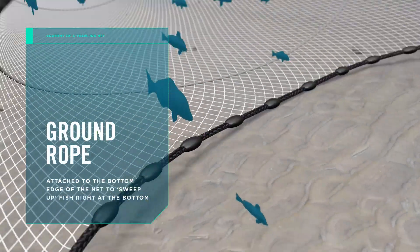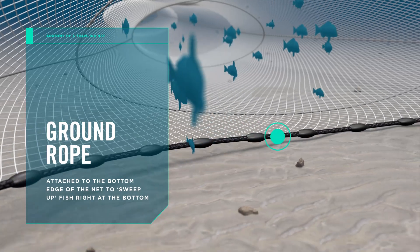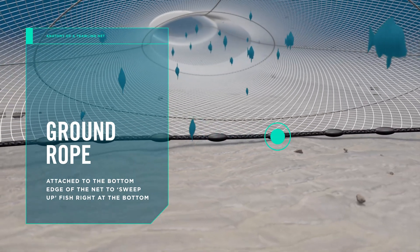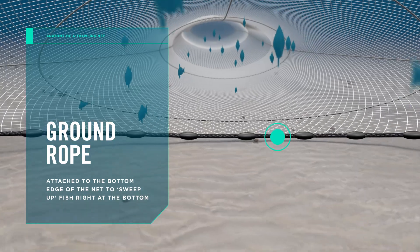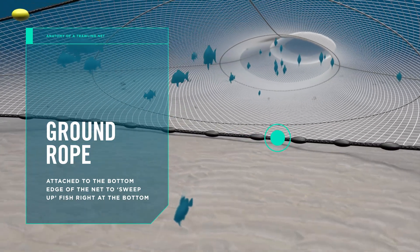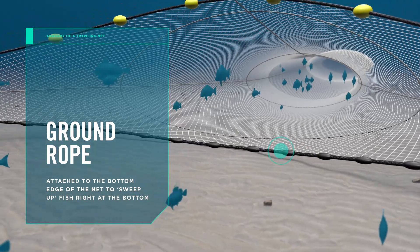Ground ropes are attached to the bottom leading edge of the net and run lightly across the sea floor, sweeping up fish right at the bottom and gathering them into the net. The doors, sweeps and ground rope are the only parts of the trawl rigging that make contact with the seabed.